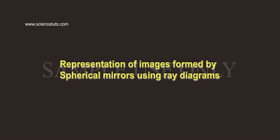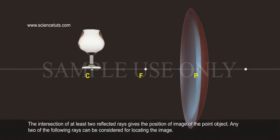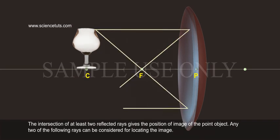Representation of images formed by spherical mirrors using ray diagrams. The intersection of at least two reflected rays gives the position of image of the point object.